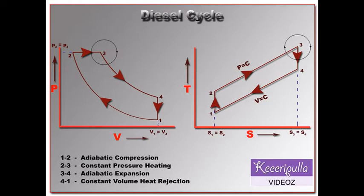This point is known as the point of cutoff. The volume of air at this point is known as cutoff volume. The air is then allowed to expand adiabatically up to point four.